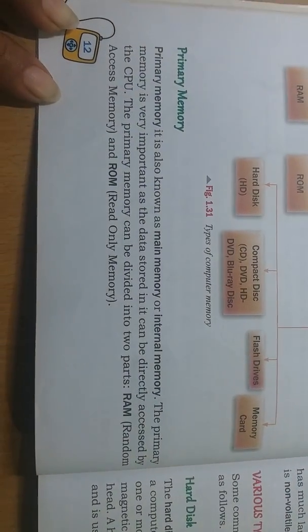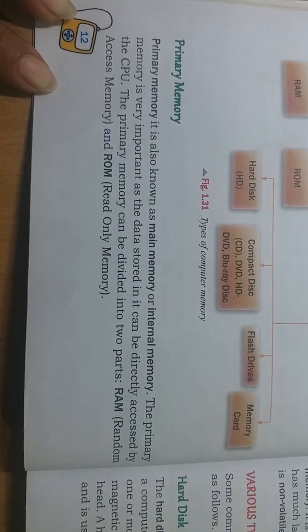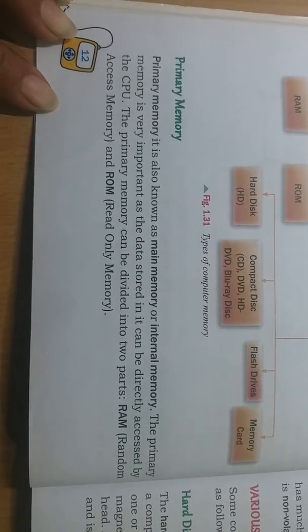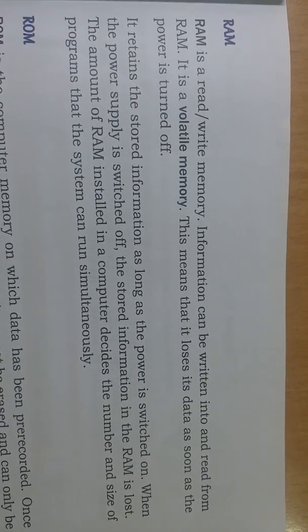Memory can be divided into two major categories: primary memory and secondary memory. Primary memory is further divided into RAM and ROM, while secondary memory includes hard disk, CD, DVD, Blu-ray disc, flash drive, and memory card. Primary memory, also known as main memory or internal memory, is the memory that the CPU can directly access.